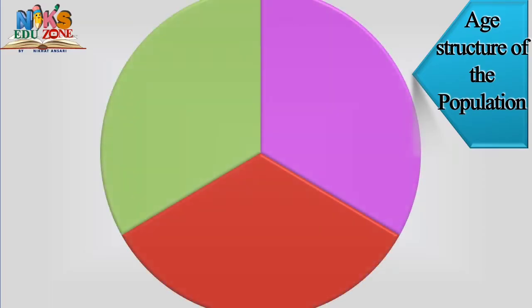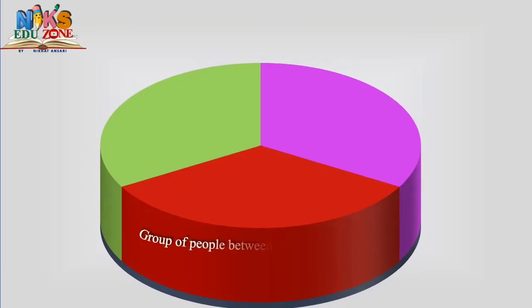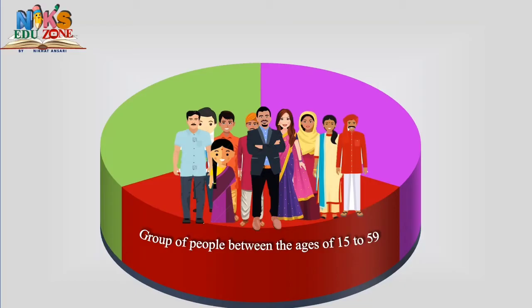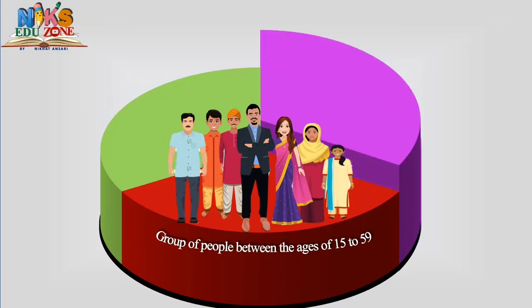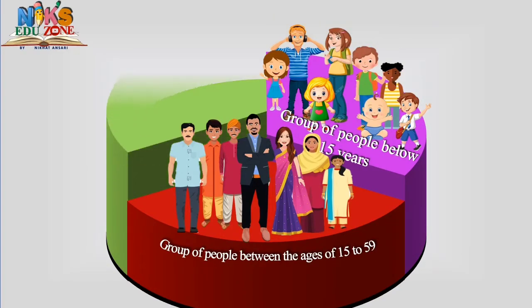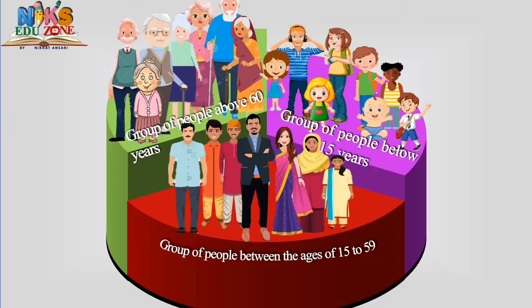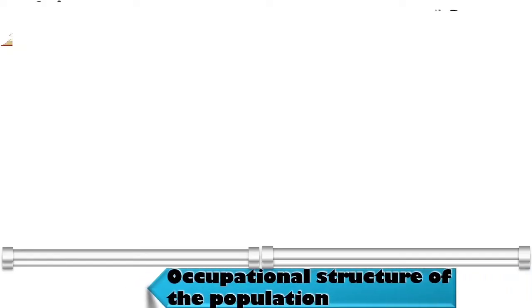The second factor is age structure of the population. When the population is subdivided into age groups, this is called age structure. The population is divided into three categories. The first group — people between ages 15 and 59 — is called the productive population; they are active in service and business and directly participate in economic activities. Where the proportion of youth in this group is higher, development is rapid. The second group — people below 15 years — are totally dependent on the productive population. The third group — people above 60 years — also fall in the dependent category, though their knowledge and experience make them a valuable asset to society.